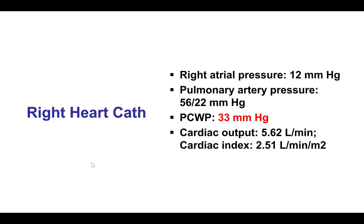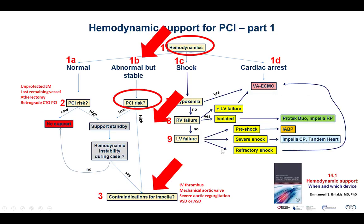Right heart catheterization showed a wedge pressure of 33 mmHg, with an RA pressure of 12 and a PA pressure of 56 over 22, with a preserved cardiac index of 2.51. Given the high wedge pressure, the patient would fall into the category of abnormal but stable hemodynamics.